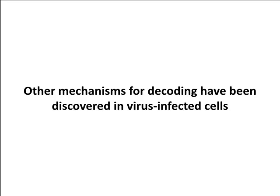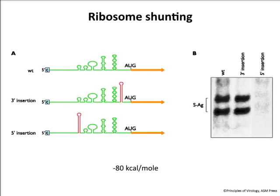So that was an overview of how translation works in eukaryotic cells. What I want to tell you next is how viruses have changed this process to suit their decoding of their genomes. We're going to look at a couple of different mechanisms that are virus-specific. The first one is called ribosome shunting.